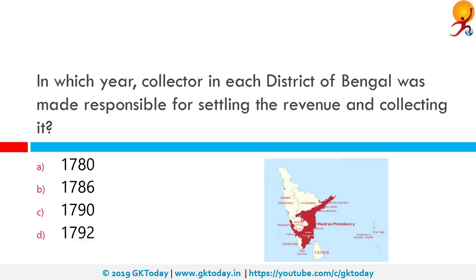In which year was the collector in each district of Bengal made responsible for settling and collecting revenue? The correct answer is 1786. In 1786, the Committee of Revenue was renamed the Board of Revenue. They quickly decided that the centralized structure of revenue administration would have to be reformed by giving increasing responsibilities to district authorities.